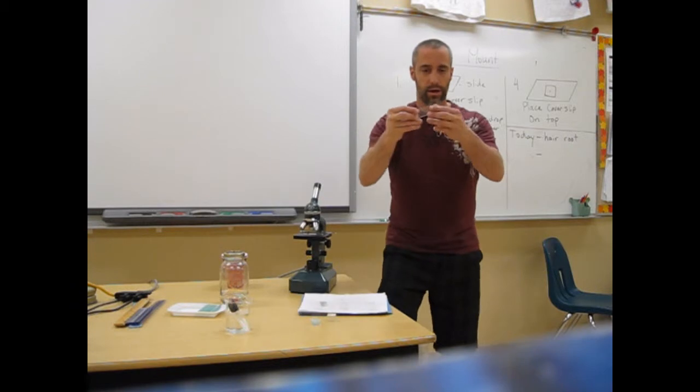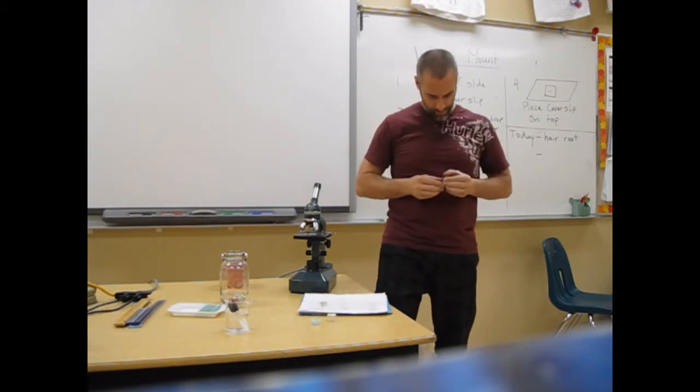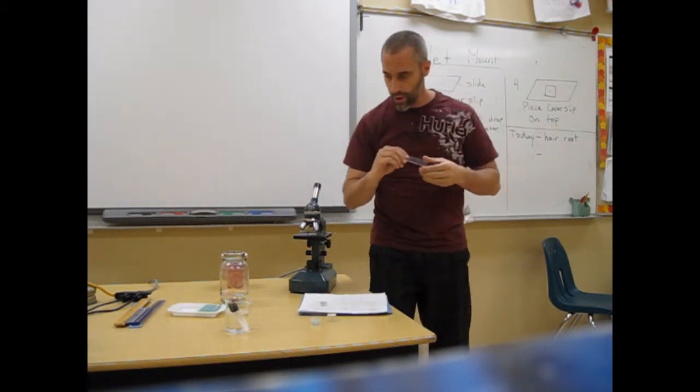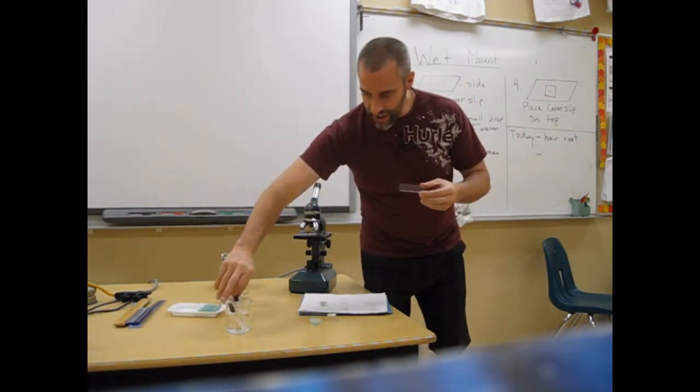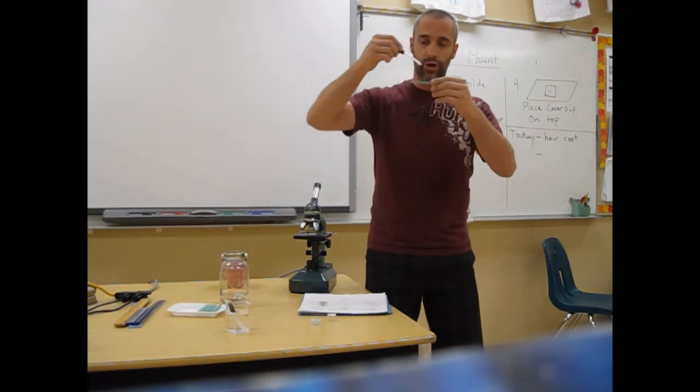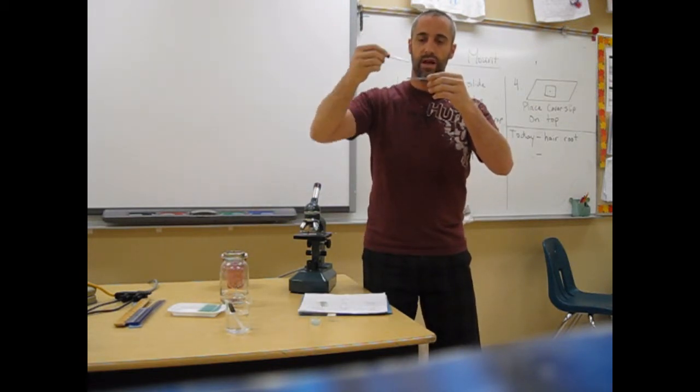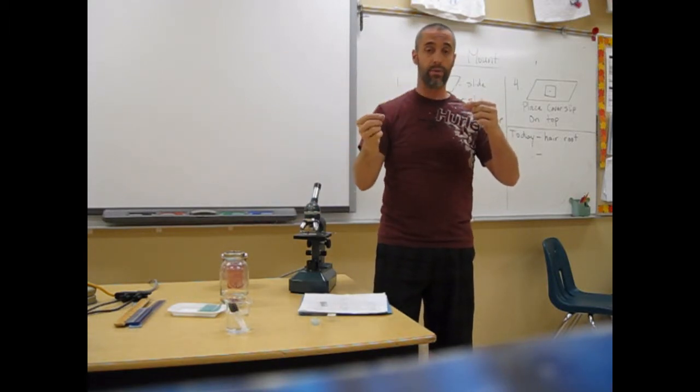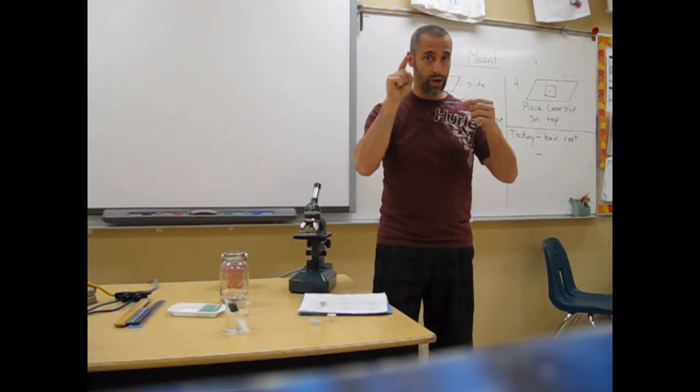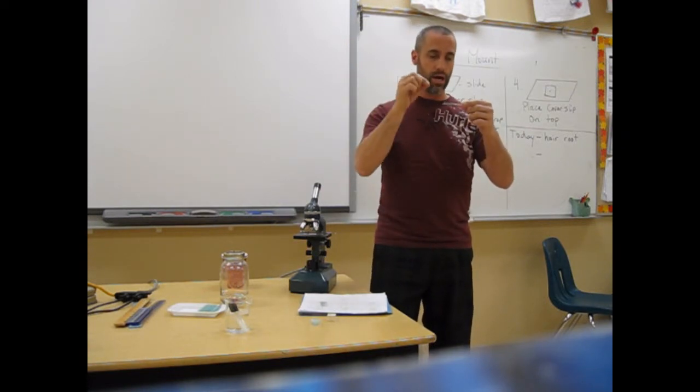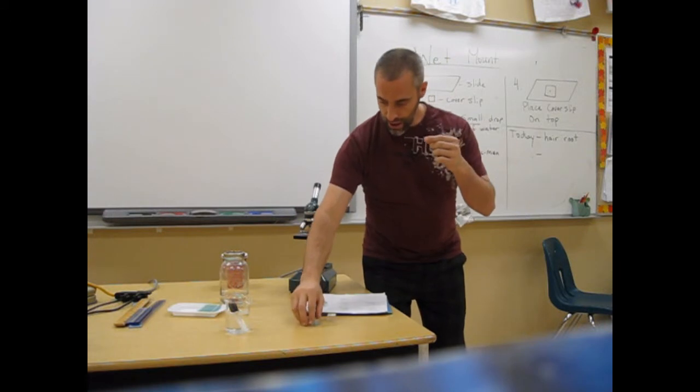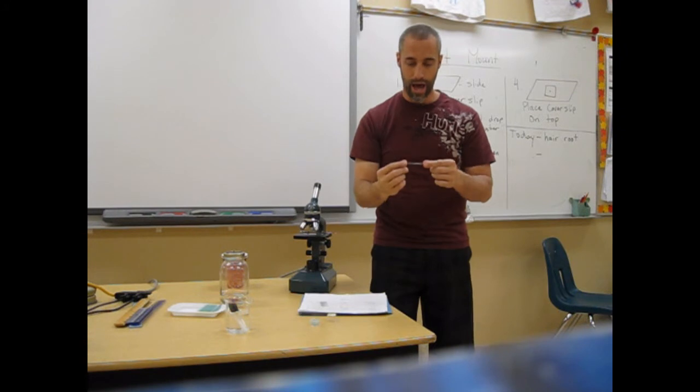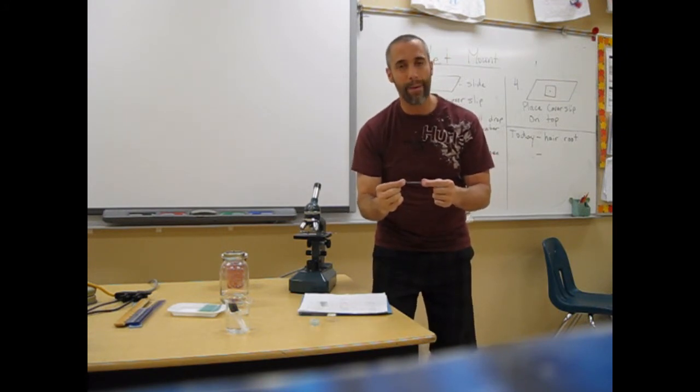So just to review, you take a slide, one slide. You put a very small, not even a drop of water, on the slide. Specimen goes on, and for you guys, that's going to be a hair out of your head. Make sure you get the root, because that will be the most interesting thing to look at. You put it in the water. You take your cover slip, and you plunk it on top, and ba-da-bing, ba-da-boom, you have a wet mount.